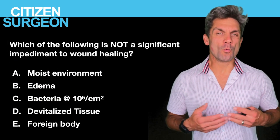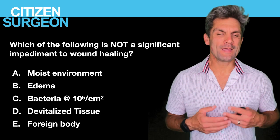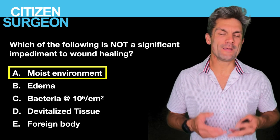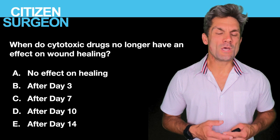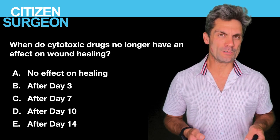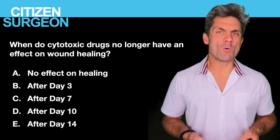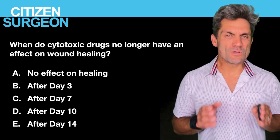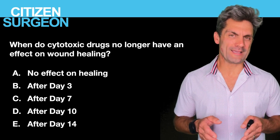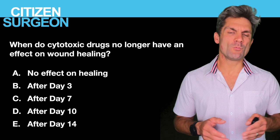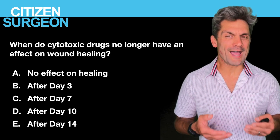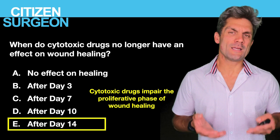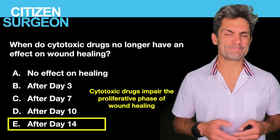Question nine: which of the following is not an impediment to wound healing? The answer is A, a moist environment — you actually want a moist environment to help heal wounds. Question ten: when do cytotoxic drugs no longer have an effect on a healing wound? Cytotoxic drugs interfere with dividing cells, which occurs during the inflammatory and proliferative phases. Early on, cytotoxic drugs increase the risk of wound dehiscence. After day 14, cytotoxic drugs no longer have an effect on wound healing.